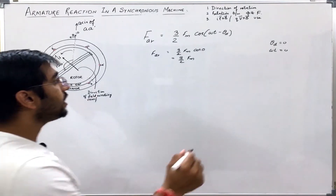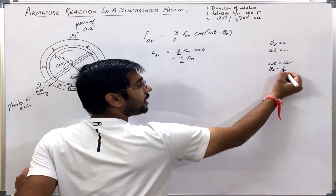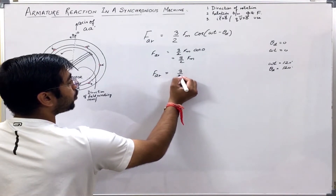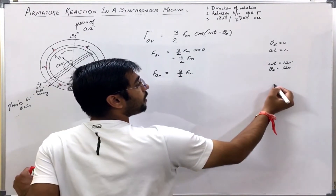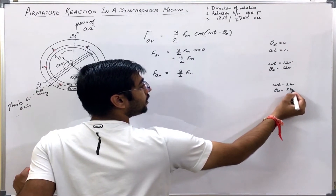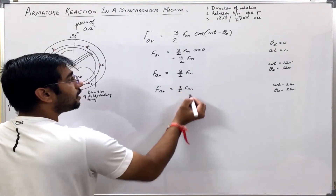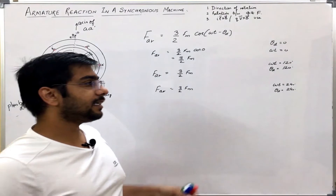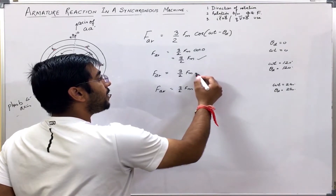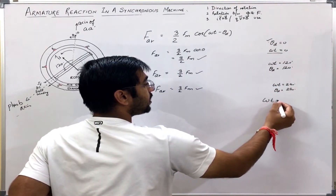Again, if I take a value at ωt = 120° and θ_d = 120°, then the value of armature reaction MMF in the air gap is (3/2) F_m. Similarly, at ωt = 240° and θ_d = 240°, we still get the armature reaction value as (3/2) F_m. From these three relations, we can see that the MMF wave has its maximum possible value whenever ωt = θ_d.